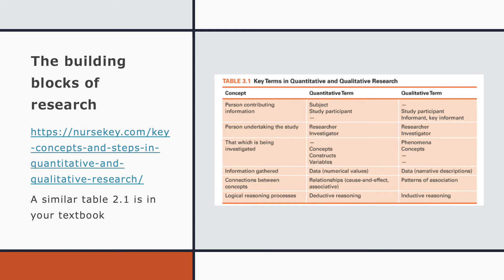Constructs exist at a higher level of abstraction than concepts. Justice, beauty, happiness, and health are all constructs. Constructs are considered latent variables because they cannot be directly observable or measured. One example, well known to many nurses, is the construct of self-care from Orem's model of health maintenance. If you search measures and measurements, you can find more information on these terms.